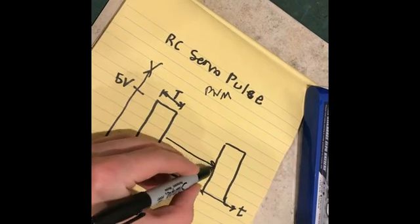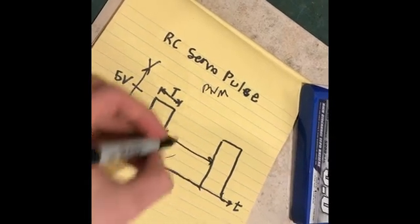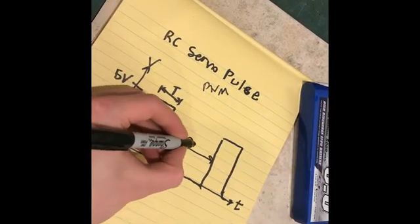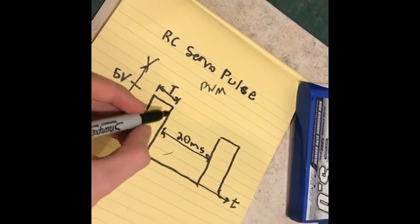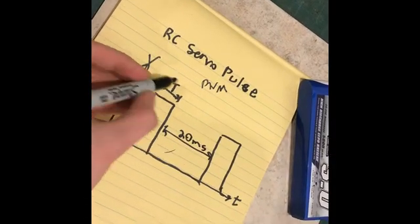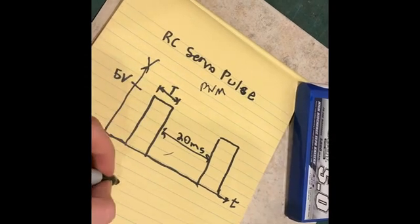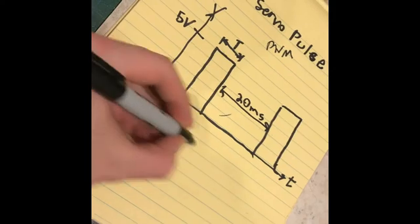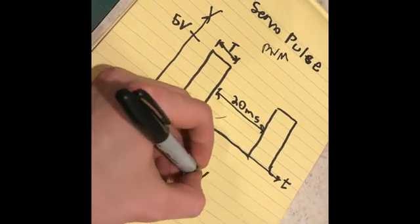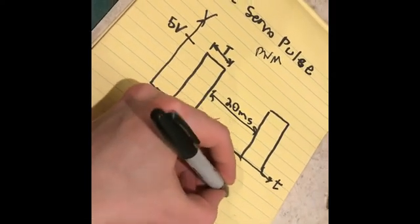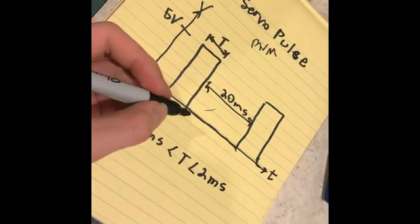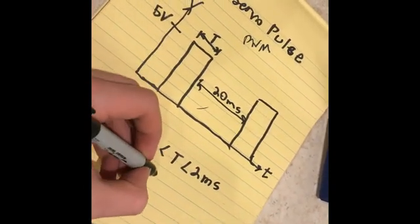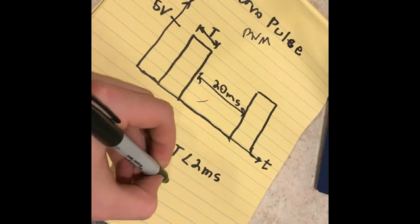And in between the two pulses it's just like 20 milliseconds. That's fairly standard. And then this T ranges from 1 millisecond to 2 milliseconds. But that also means right in the middle would be 1.5 milliseconds.